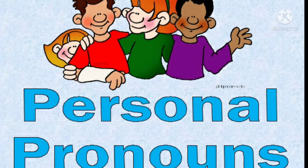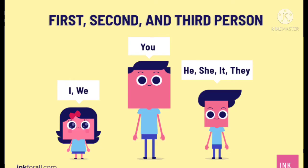While discussing personal pronouns, first of all we should know what are the first, second, and third person in the English language. First person indicates the speaker — the person who is speaking. For example, when I say 'I am saying,' the word 'I' refers to myself. So 'I' indicates the speaker and is the first person.